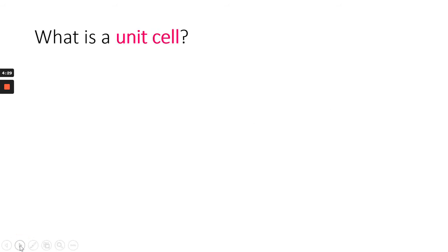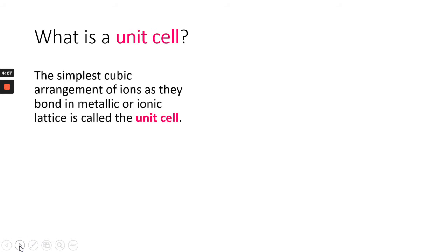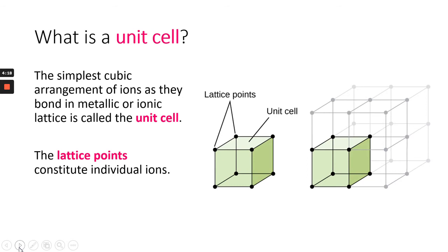So the unit cell is basically the simplest cubic arrangement of ions or atoms as they bond. Generally, ions are found in metallic or ionic lattices. So we say that the lattice points are the same as individual ions.